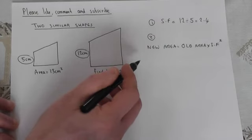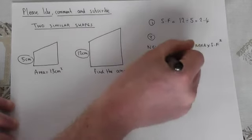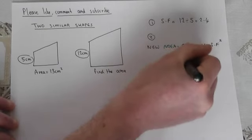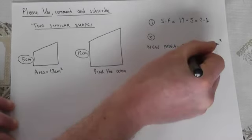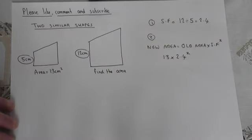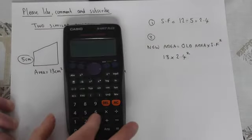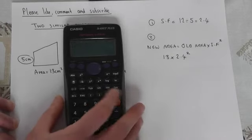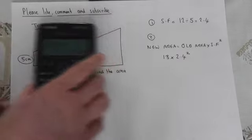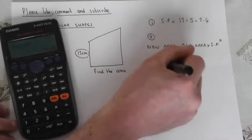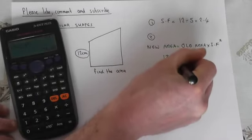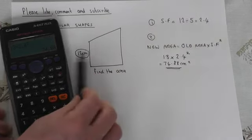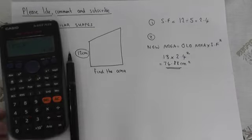So the new area is as follows. The old area was 13. The scale factor was 2.4. So for area we multiply by 2.4 squared. So we do 13 times by 2.4 squared and the new area is 74.88 centimeters squared.